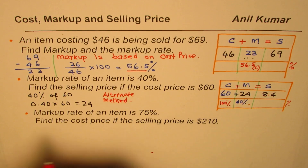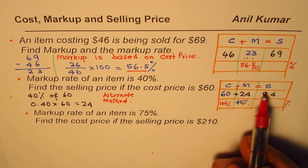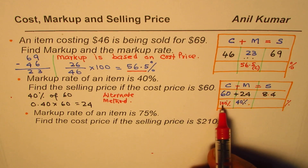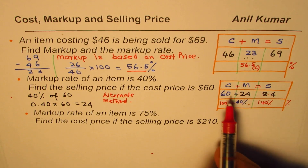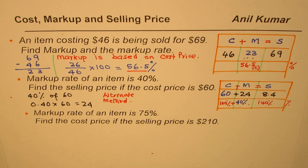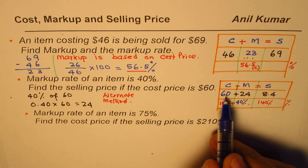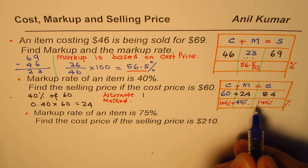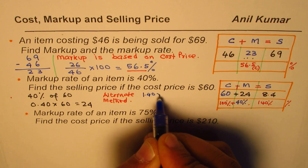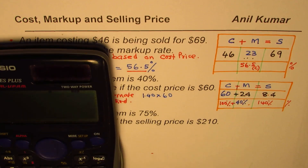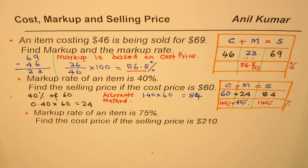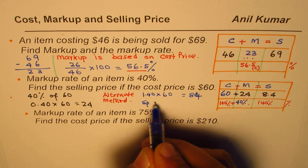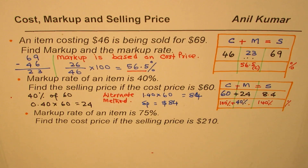Here is an alternate method, and this is a very critical method to adopt. Since markup is based on cost price — meaning cost price is 100 percent — and markup is 40 percent, the selling price is 140 percent of cost price. So we can directly calculate 140 percent of 60, which is 1.40 times 60, and that equals 84. We get the same answer: the selling price is $84.